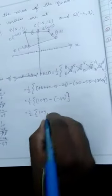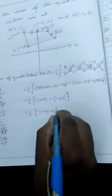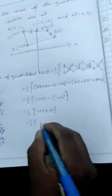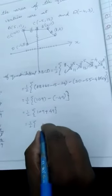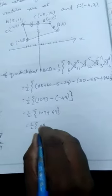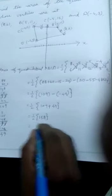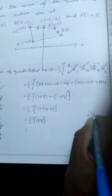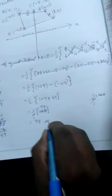The next step is 1/2 of (109 minus into minus, which is plus, 49) equals 1/2 of 158. Adding: 9 plus 9 is 18, carry 1; 1 plus 4 plus 5 is 158. Multiply 1/2 into 158: 158 divided by 2 equals 79. The area is 79 square units. Thank you.